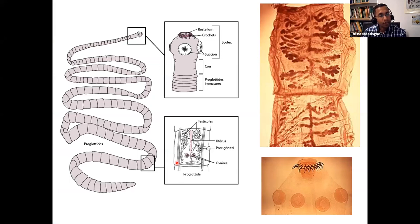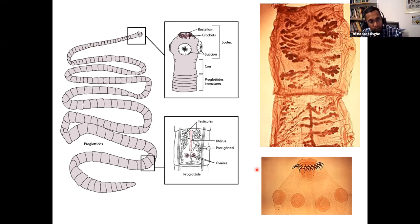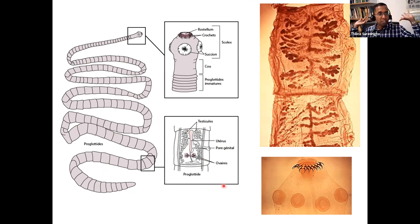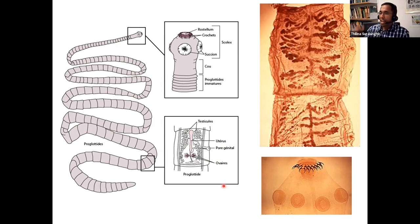Tapeworms have hooks and suckers that help them latch onto the host's gut wall, but they will not drink blood. They are quite long and have multiple repeating units called proglottids. A single proglottid has complete sets of male and female reproductive systems and can function as an independent unit. If you ingest a single proglottid in contaminated food, you will end up with a complete worm — they are extremely well adapted to a parasitic mode of life.